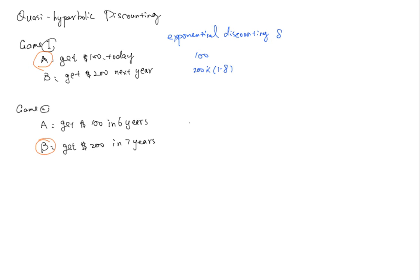So in game two, you get $100. The net present value is the same. You calculate the discount factor and you calculate the discount factor here.